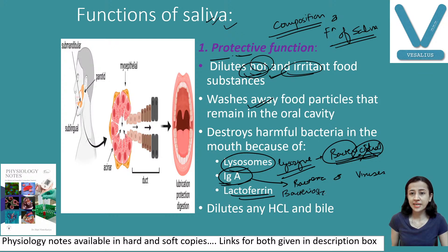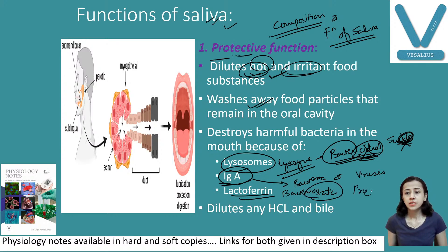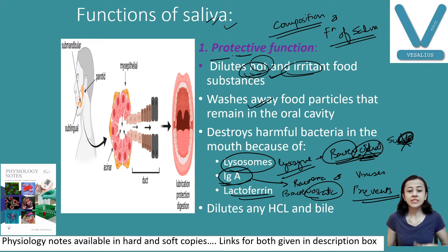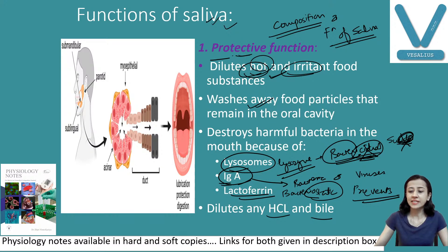What is the difference between bactericidal and bacteriostatic action? Bactericidal means destruction — like the word 'suicide' means death. Static means stoppage, so bacteriostatic prevents and stops multiplication of bacteria. Another protective function: when a person has regurgitation of HCl or bile, this is also diluted by saliva. Otherwise, the acid is so strong it can damage the esophagus and oral cavity. This is the first function: protective function.